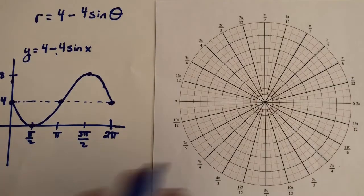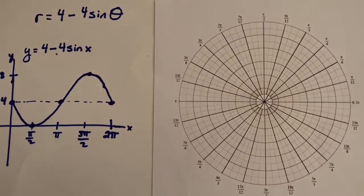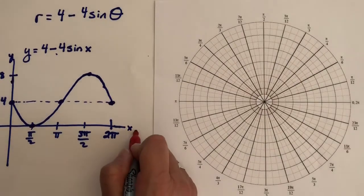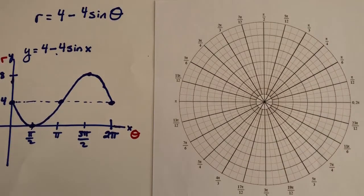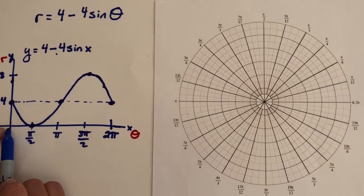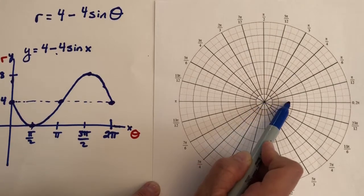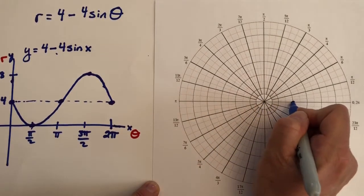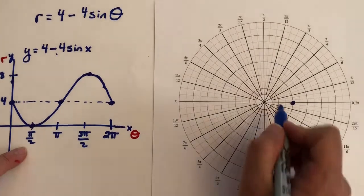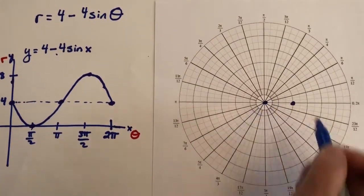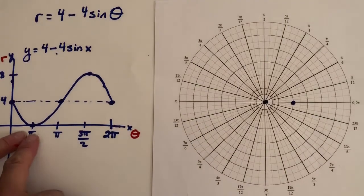Now let's see how that translates to polar. Remember, we're using the rectangular graph just for reference. The x-axis represents theta values, and the y-axis represents r values. When the angle is 0, we're 4 units away. At pi over 2, we're at the pole at 0. The graph does not cross through the pole because it doesn't go negative — it will just touch the pole and then move away.